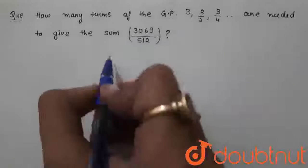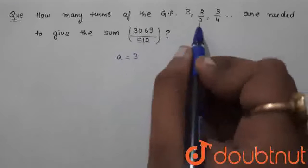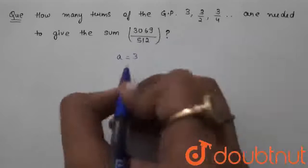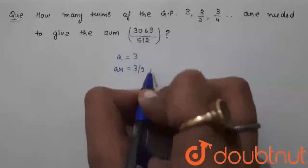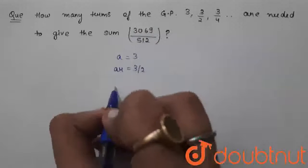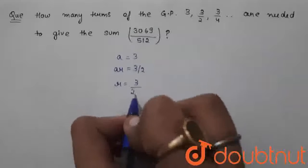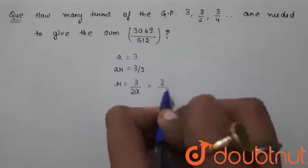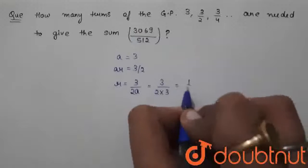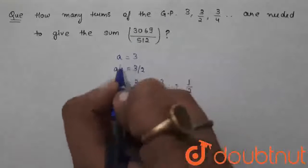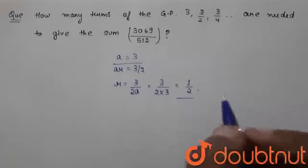According to the GP, we can see the first term a is equal to 3, and the second term ar is equal to 3/2. So with these two, we can find out the value of r, which will come as (3/2) divided by 3, that is 1/2. So we have got the value of the first term as well as the value of the common ratio.